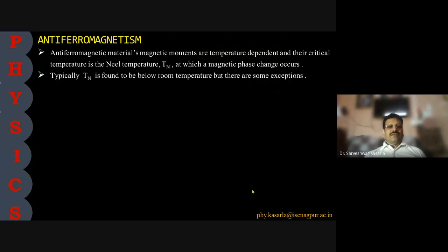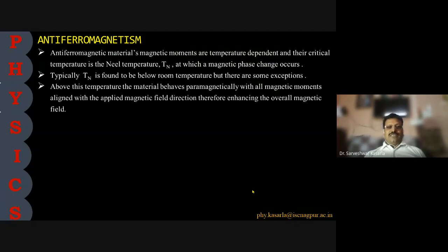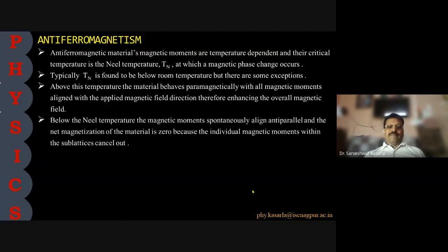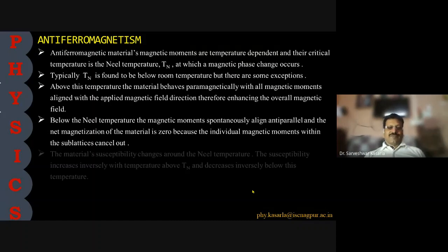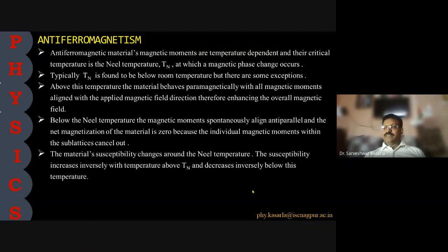Typically, the Néel temperature is found to be below room temperature, but there are exceptions. Above the Néel temperature, the material behaves paramagnetically with all magnetic moments aligned in the applied field direction. Below the Néel temperature, the magnetic moments spontaneously align anti-parallel and the net magnetization is zero, because the individual magnetic moments within the sublattices cancel out. The susceptibility increases inversely with temperature above the Néel temperature and decreases inversely below it.